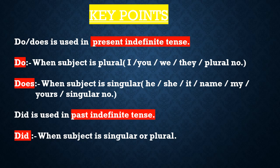Aapko do or does ka istamal ko samajhna hoga. Do or does ka use present indefinite tense mein hota hai. Vakye mein agar karta ek vachan hai toh does ka istamal hoga, aur agar karta bahu vachan hai toh do ka use karna padega. Did is used in past indefinite tense — it doesn't matter whether the subject is singular or plural. Did ka use past indefinite tense mein hota hai. Subject singular ho ya plural, did hi use hota hai.